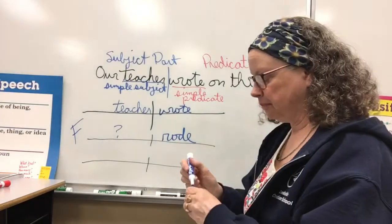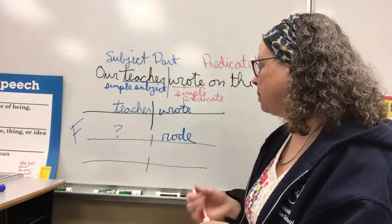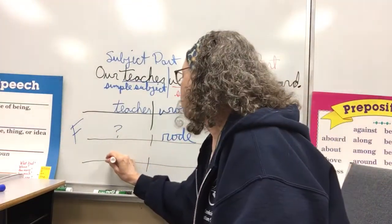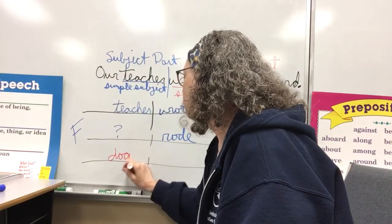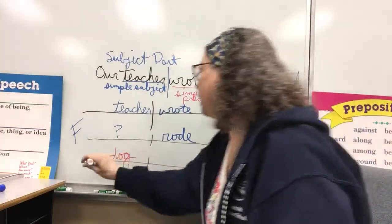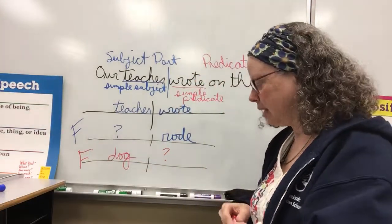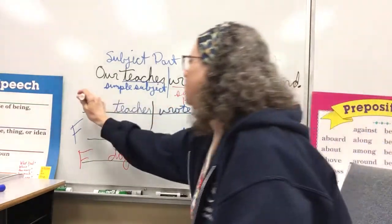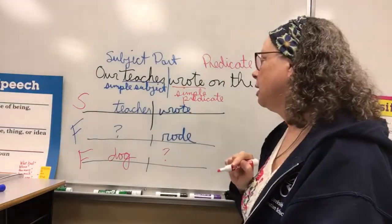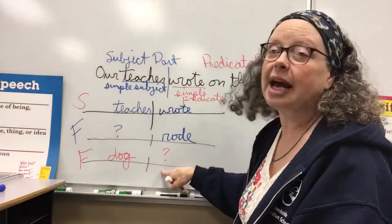I'll put a big F right in the front of it. If someone wrote 'a dog named Spike,' the who or what it's about is the dog, but I don't know what the dog did — that is a fragment, and I would write a big F. So the complete sentence has its subject and its predicate. This one is a fragment with no subject, and this one is a fragment with no predicate.